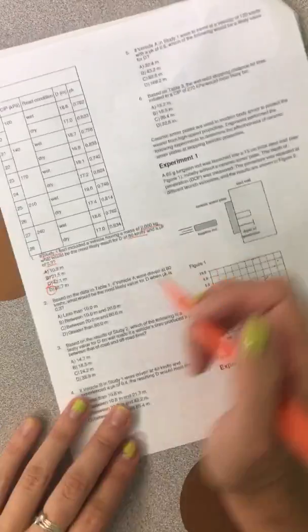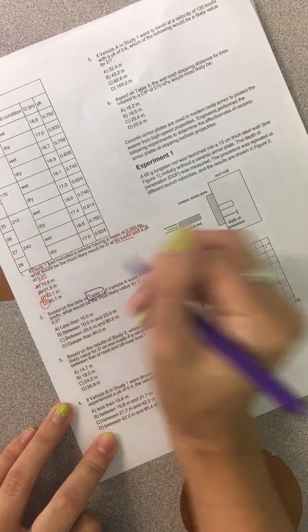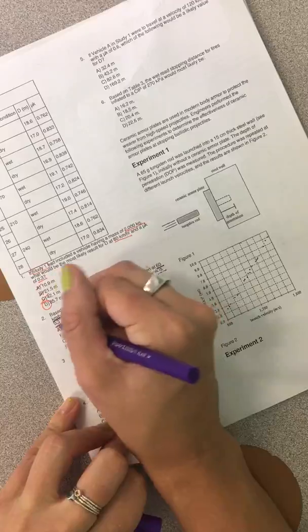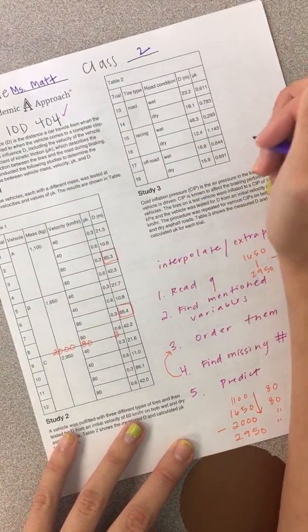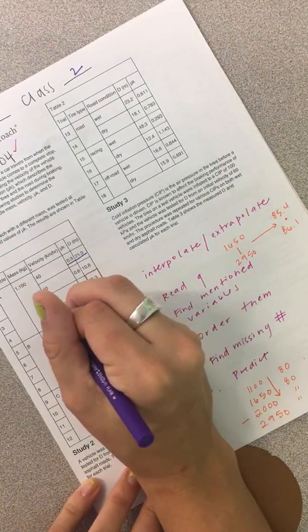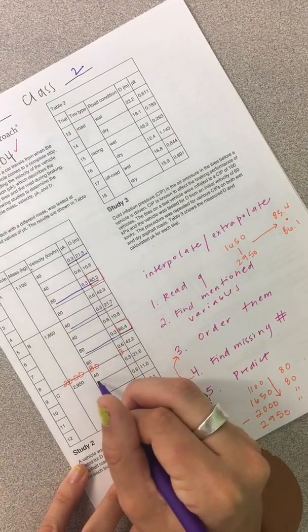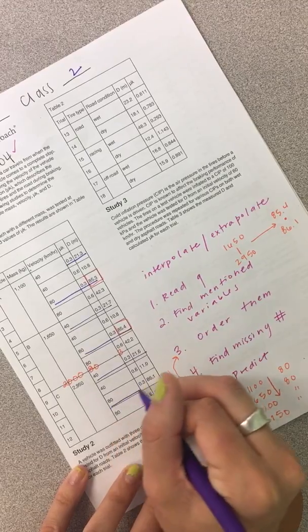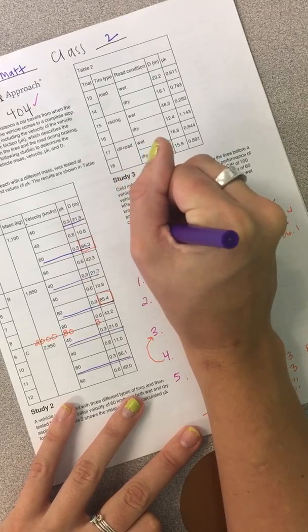Alright, based on the data in table one, so I'm going to go to table one. If vehicle A were driven at 60 kilometers per hour, what would be the most likely value when UK is 0.3? So based on table one, what would it be? We have 40 and 0.3, 80 and 0.3, 40 and 0.3, 80 and 0.3, 40 and 0.3, 80 and 0.3. Now, 40, 80, so 60 falls in between it.